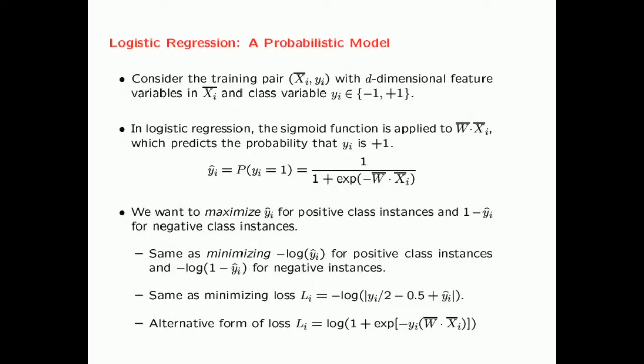So how can we ensure that this model will have good performance? The idea is to maximize the probability that the predicted value of Y_i, denoted Y_i-hat, equals 1. We want to maximize this value for positive class instances and minimize it for negative class instances. Minimizing this value for negative instances is the same as maximizing 1 minus Y_i-hat for those instances.